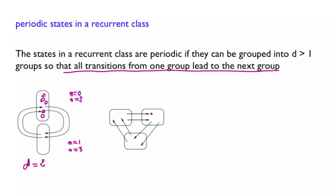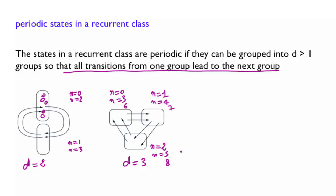Here is another example with a period of 3, so d equals 3. If you are in one of these states at a given time, the next transition is guaranteed to bring you to the second group, then to the third group, and then back again in a very systematic way. So if you start here at n=0, you would be in the second group at n=1, the third group at n=2, back to the first at n=3, and so on. If the time is of the form 3k for any k ≥ 0, you are guaranteed to be in the original group of states.